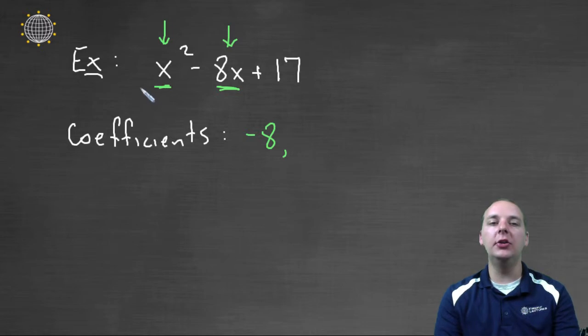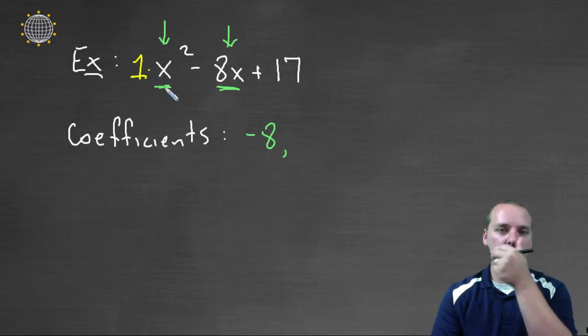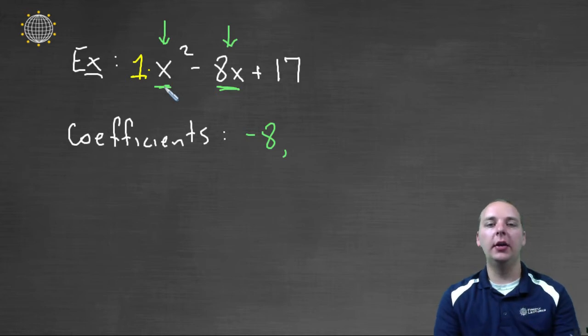It's just an understood one. Okay, so even though we can't see it, x squared times one is x squared. So we can also consider one to be one of our coefficients as well.